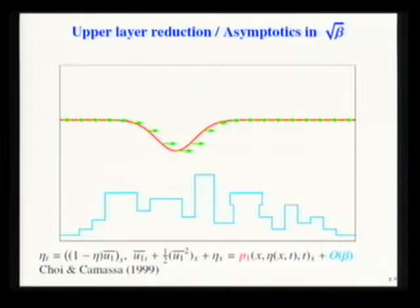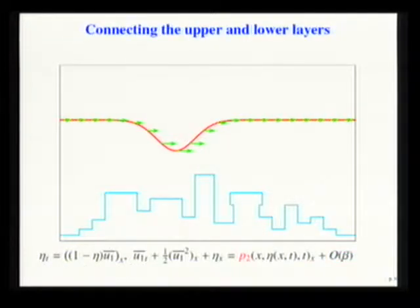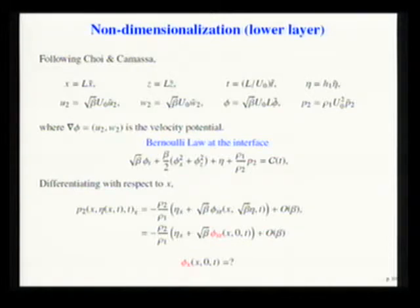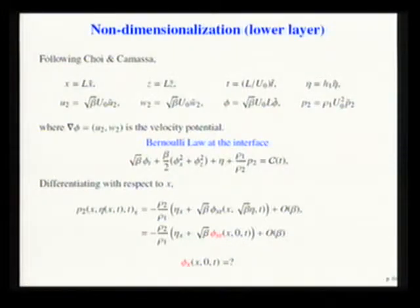These closed equations are in the perturbation of the interface (shown in red) and the vertical-average horizontal velocity. The connection with the lower layer is performed through the pressure term by continuity — we can compute the pressure at the interface from the information from the lower layer. A different non-dimensionalization is performed following the work of Choi and Camassa for the flat bottom case.